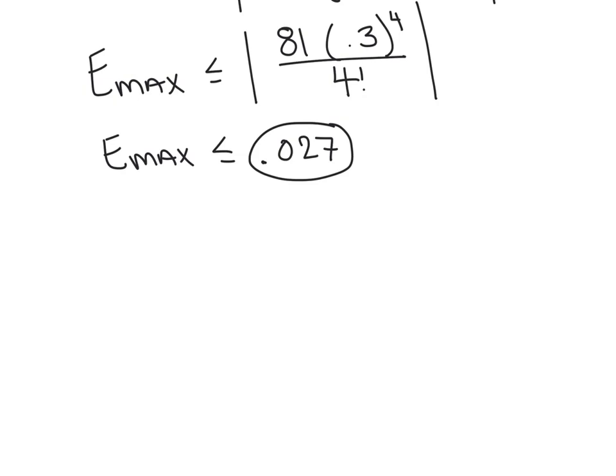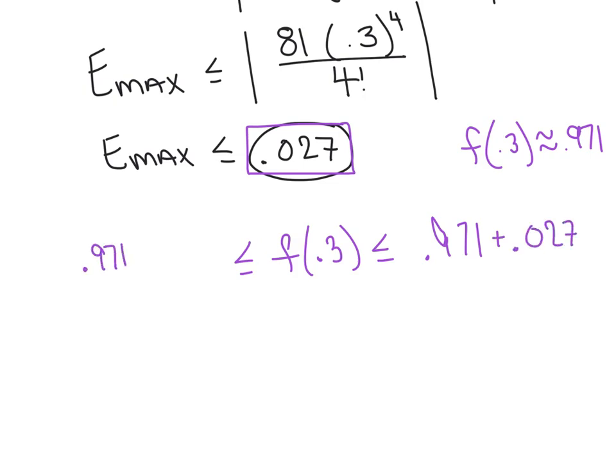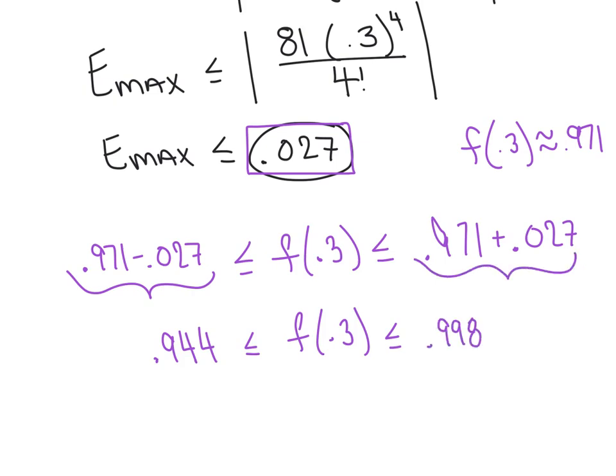Now, one last comment to hopefully deepen our understanding here is, do you recall, on the last slide, we said, according to our third degree polynomial, we said f(0.3) was approximately 0.971. So, we could create an interval that basically sandwiches the real f(0.3) within it. For instance, we could say the real value of f(0.3) is somewhere between, because basically we're saying we're off by 0.027 in one direction or the other. So, it might be 0.971 plus the 0.027 or it might be 0.971 minus the 0.027. Plugging this into my calculator, that would give me 0.944. And plugging this into my calculator, I got 0.998. So, we're just really confident, 100% confident, in fact, in saying that the real f(0.3) falls within that interval.